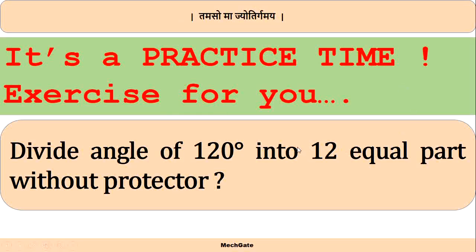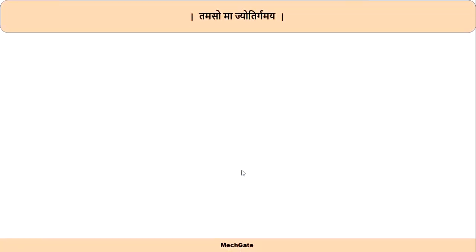Now it's practice time. Divide an angle of 120 degrees into 12 equal parts without a protractor, using a compass only. You have to bisect the angle 6 times to get 12 equal parts. Do like, share, and subscribe for more such content, and we'll see you in the next video.